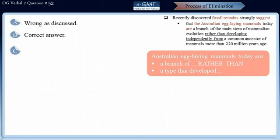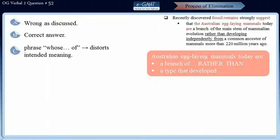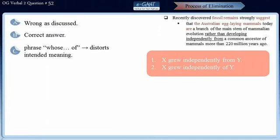Let us evaluate choice C to find out why it is not correct. The phrase 'whose development was independent of' distorts the meaning of the sentence. When we say 'X grew independently from Y,' we mean that X evolved from Y but independently. But if we say 'X grew independently of Y,' it means X had nothing to do with Y — X did not even evolve from Y. This is certainly not the intended meaning, so choice C is grammatically correct but changes the intended meaning and hence is incorrect.